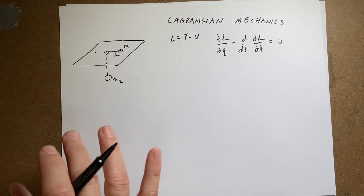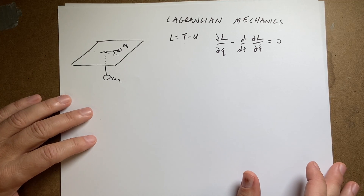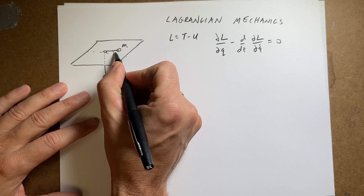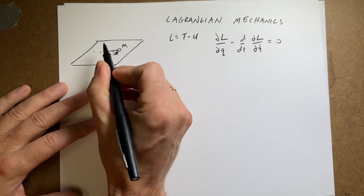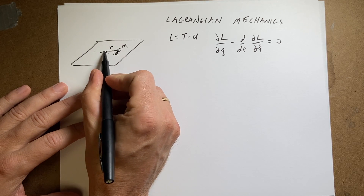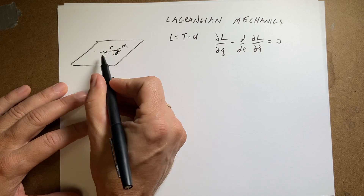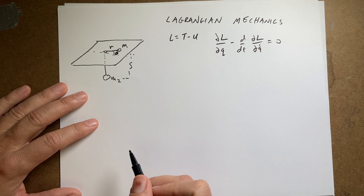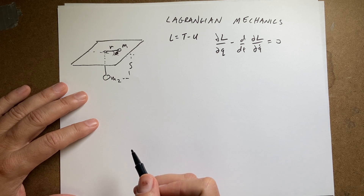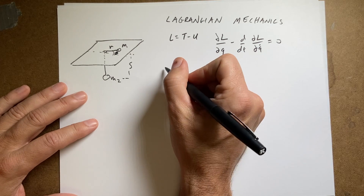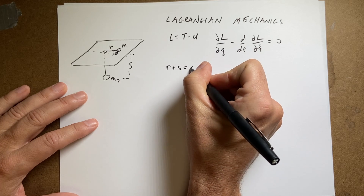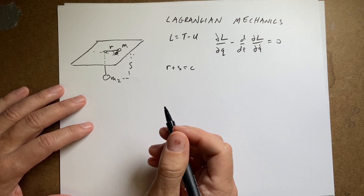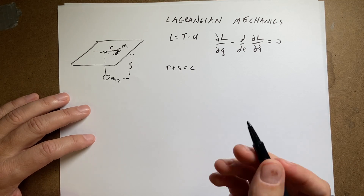If we overuse the coordinates, it's fine — we'll just make an equation of constraints. I'm going to use this angle theta, this position r (the distance from the center), and then I'll call this s, the distance below the table. Of course, r plus s equals a constant, right? The distance from here plus the distance down there has to be the same constant, because the string won't stretch. And here I have m1 and m2.